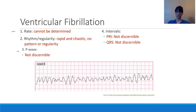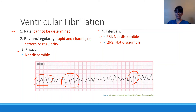P waves are certainly non-discernible. We don't have a well-formed P wave here that would represent atrial depolarization, and because of this, we're also not going to have any PRI we can look at. Even the QRS is non-discernible. Although we have these wide and bizarre-looking things that might look like ventricular tachycardia in pairs or triplets, we have to look at the entire six-second rhythm strip, and looking at the entire thing, we can't determine what is going on — it's just very chaotic.